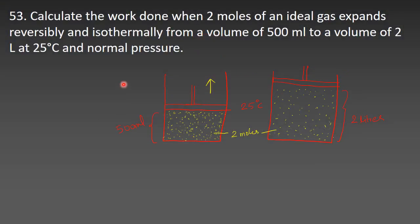Let's talk about the first question in this thermodynamics chapter. Calculate the work done when two moles of an ideal gas expands reversibly and isothermally from a volume of 500 ml to a volume of 2 liters at 25 degrees Celsius and normal pressure.